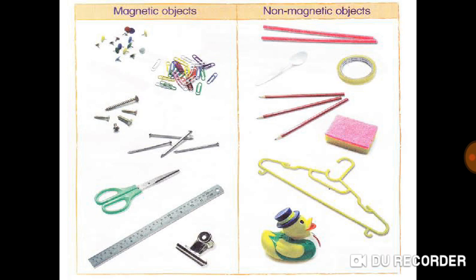What are magnetic objects? Objects that get attracted to magnets are called magnetic objects, and objects that do not get attracted to magnets are called non-magnetic objects.